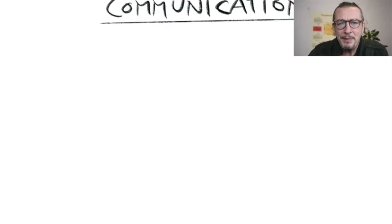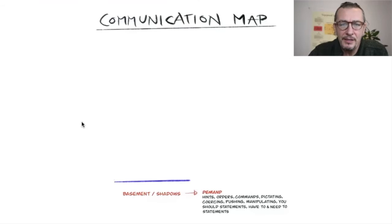I have just mapped that out in a dynamic of communication. Shadow communication is demanding—stuff that doesn't work: making orders, commands, dictating, cursing, pushing, manipulating, 'you should' statements, 'have to' or 'need to' statements. They don't work. Shadow communication.